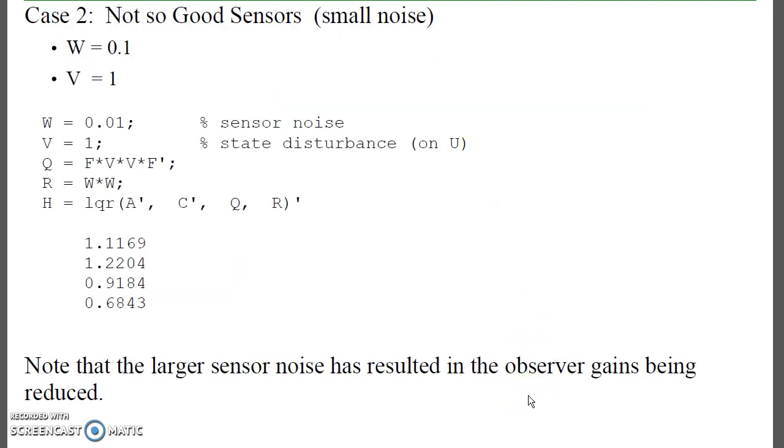Let's look at a second case. Suppose I have more input disturbances or more sensor noise. In that case, the observer gains drop. That kind of makes sense. If I have more noise, I don't want to amplify it quite as much. So the observer gains get smaller.